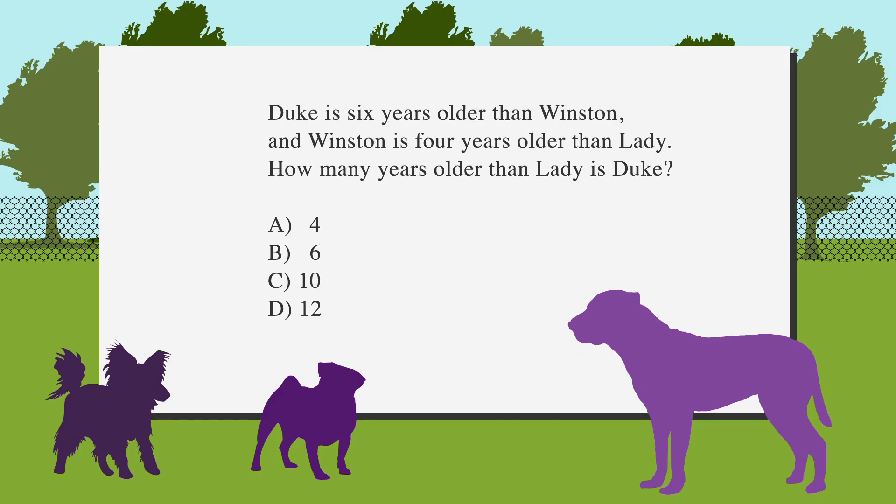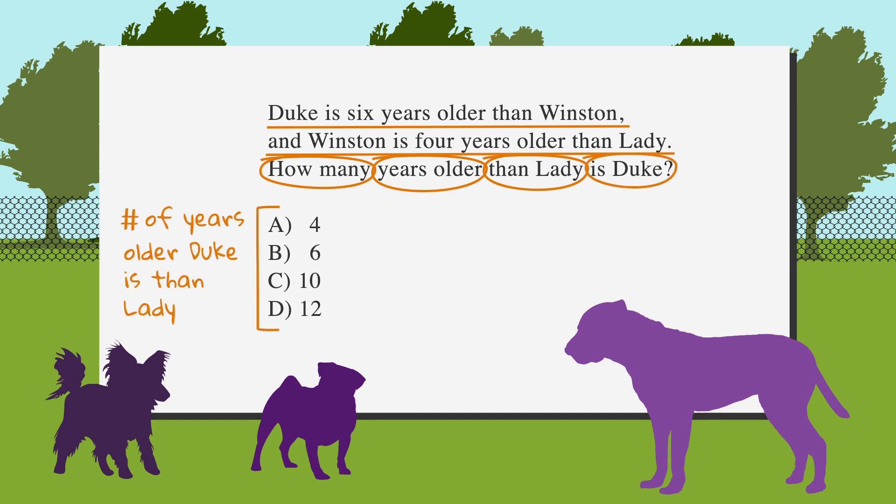First, let's underline the facts. Duke is six years older than Winston, and Winston is four years older than Lady. Now, let's circle the keywords that tell us what the question is asking. How many years older than Lady is Duke? Finally, let's label the answer choices the number of years older Duke is than Lady.